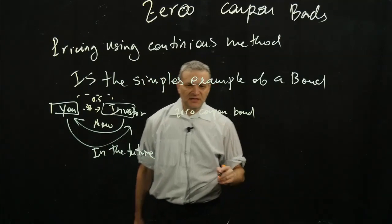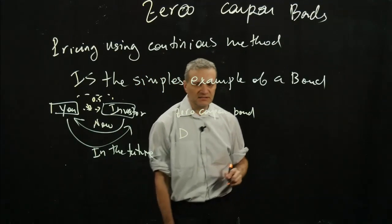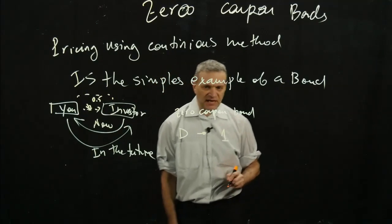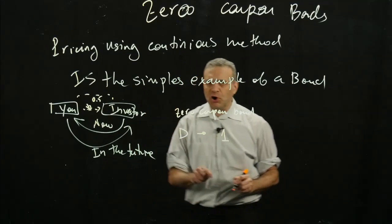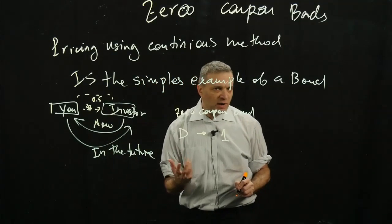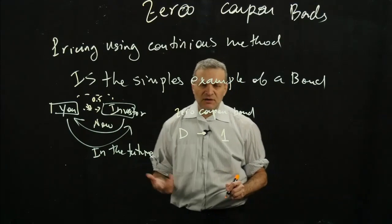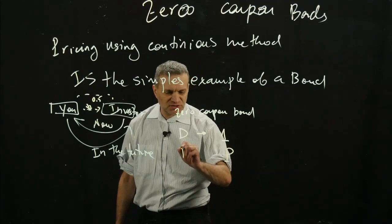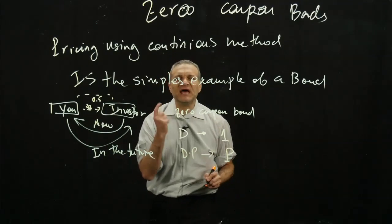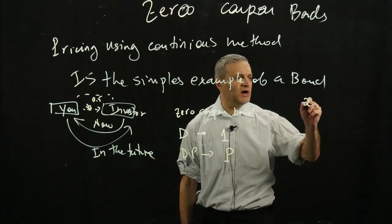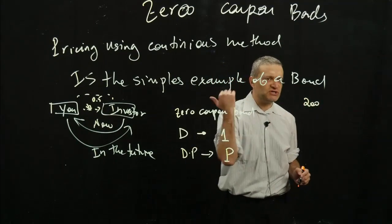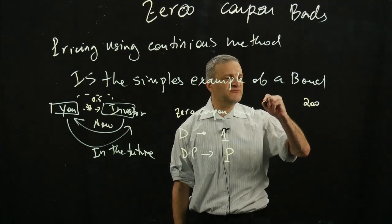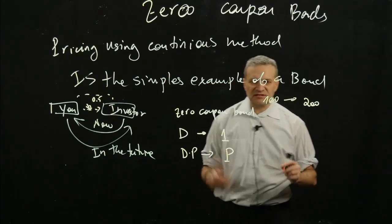We said that we have the discount factor D. The investor is going to give you D today, and you're going to give him $1 in the future. Now, if you want to borrow more, you're going to have a principal P in the future. Today the investor gives you D times P. So for example, if you want to borrow $200 in the future, let's say in four years, and your discount factor is 0.5, the investor now is going to give you $100. It's very simple.